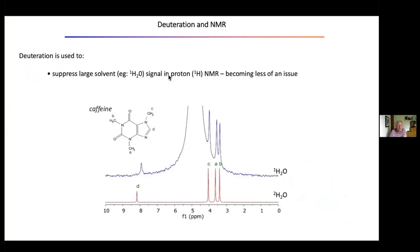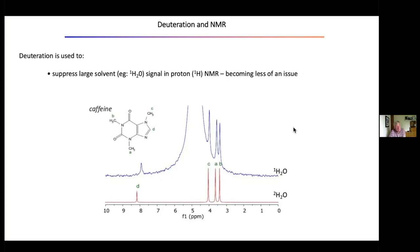Deuterium is also used to suppress large solvent signals in proton NMR. If you're dissolving your protein in water, the vast majority of your signal will be water proton. One way is to dissolve in D2O — it needs to be very high-level D2O because even a small amount of H2O will give a signal. You can then reduce this water signal and start getting narrow spectral lines. NMR machines are now being fitted with software to suppress the water signal, making this less critical than it used to be.